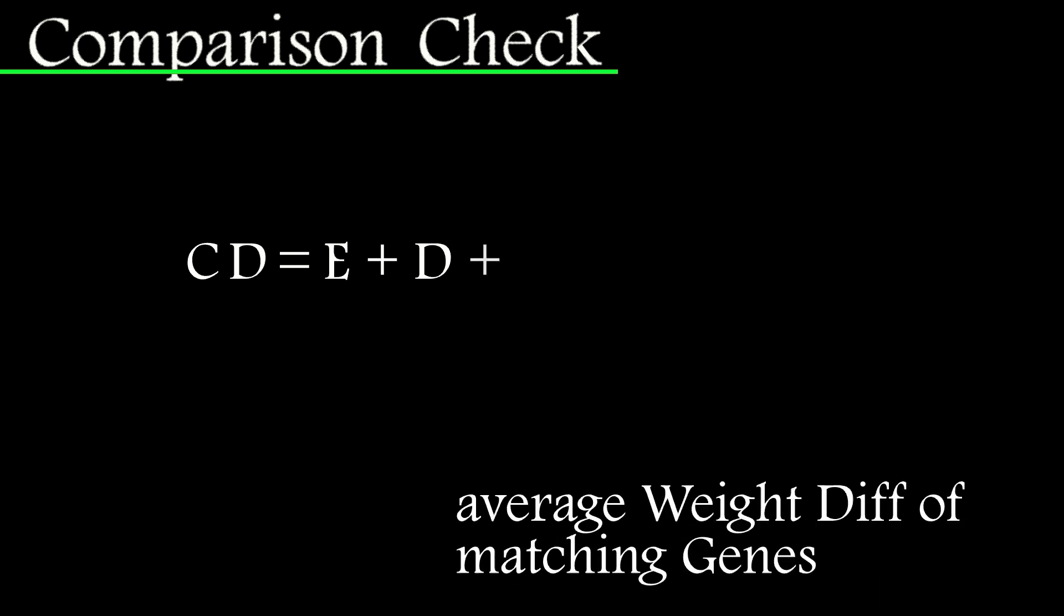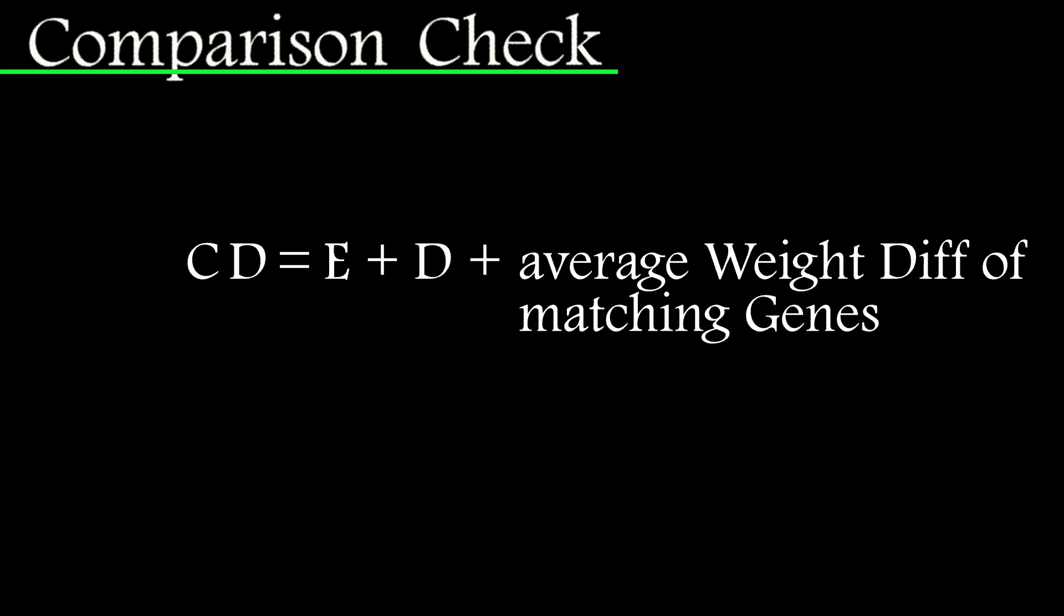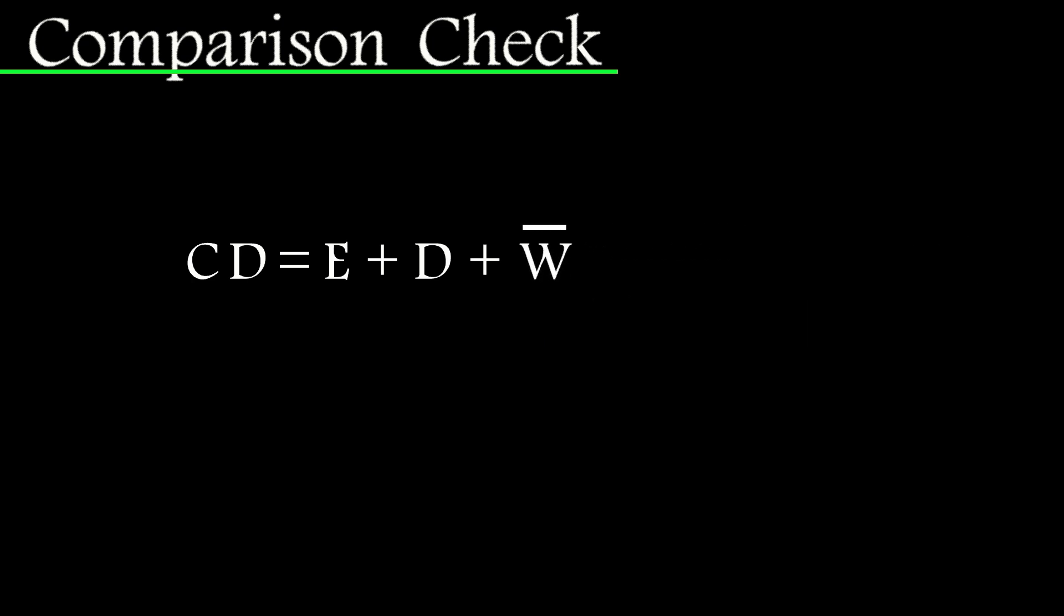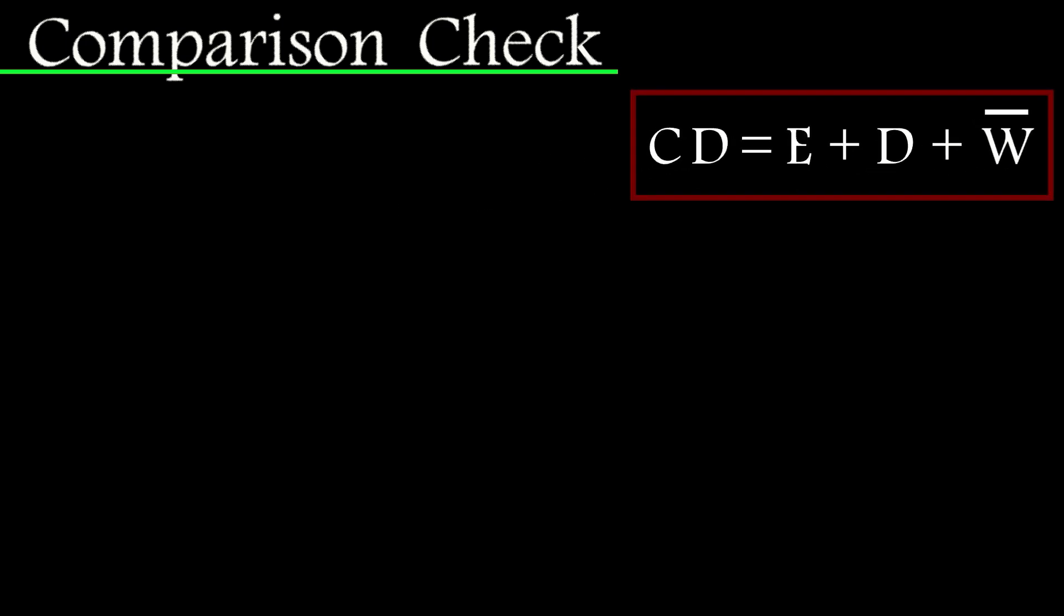First is the excess genes, followed by the non-excess genes between the networks, and finally the average weight differences between connections that are common to both networks. Note that this is an absolute value, so it'll always be positive. And when we're comparing connections, we're only looking at enabled connections.